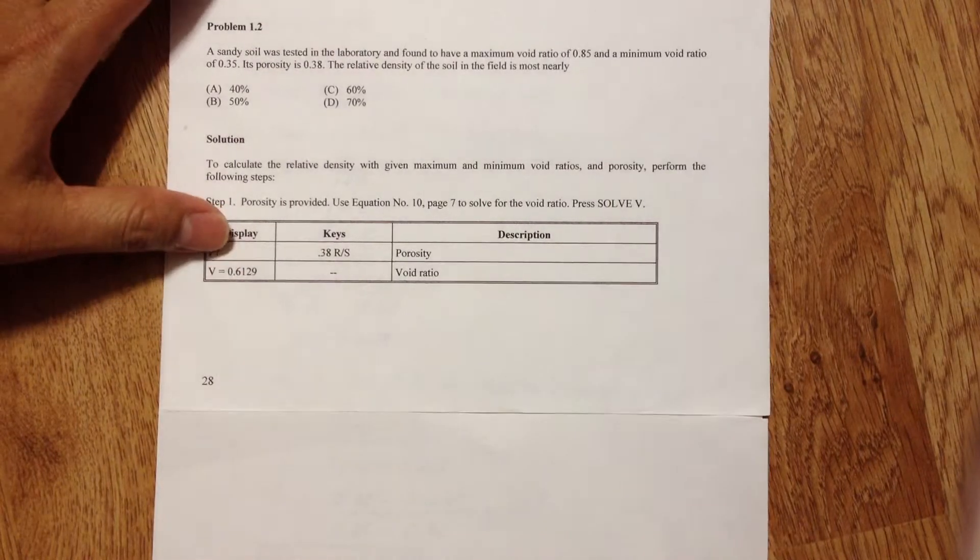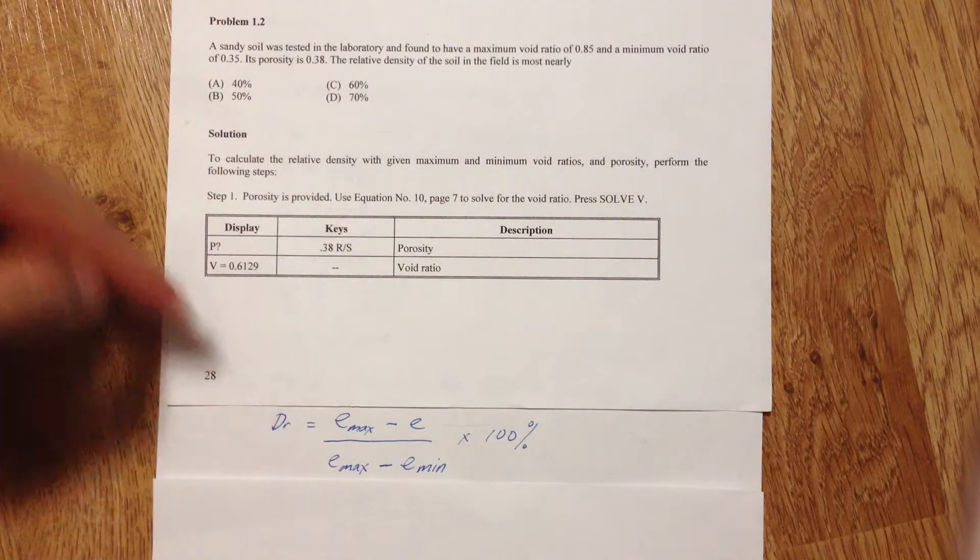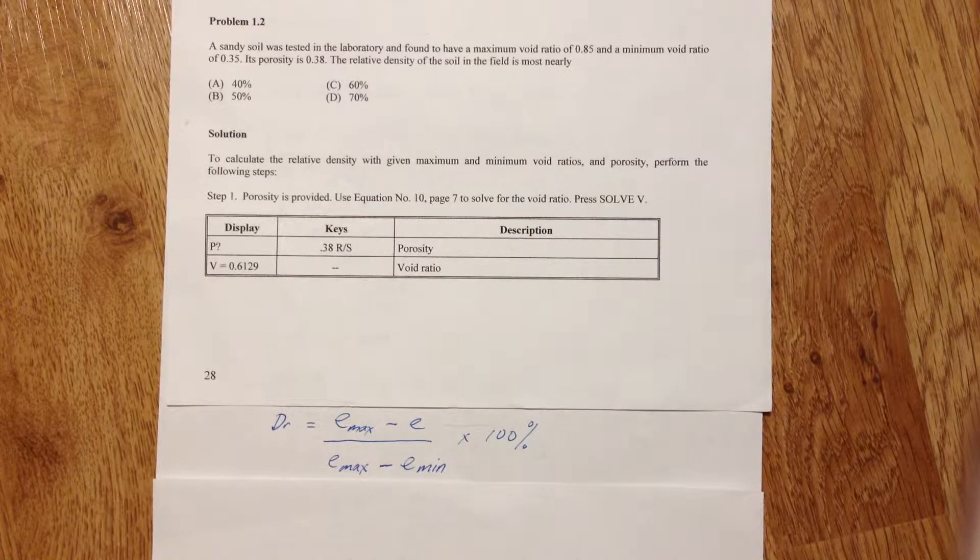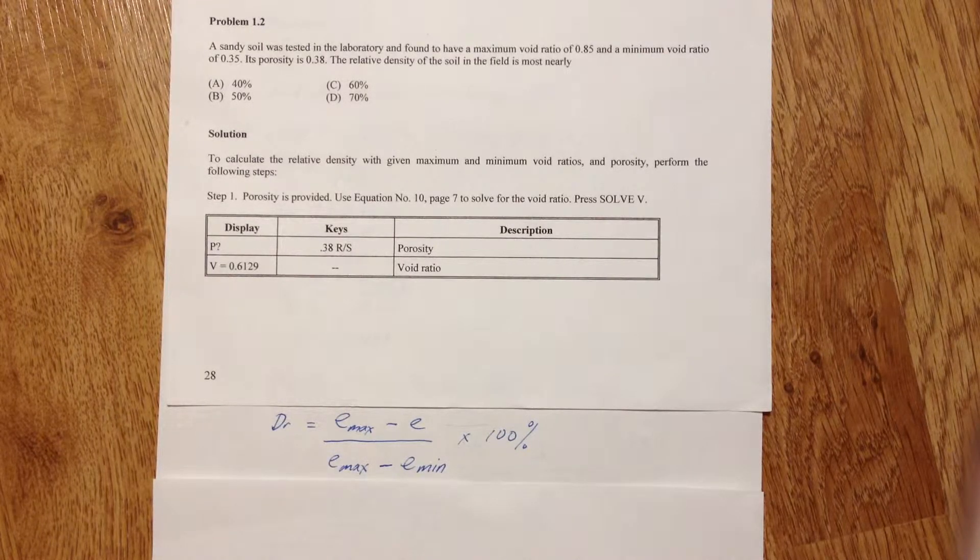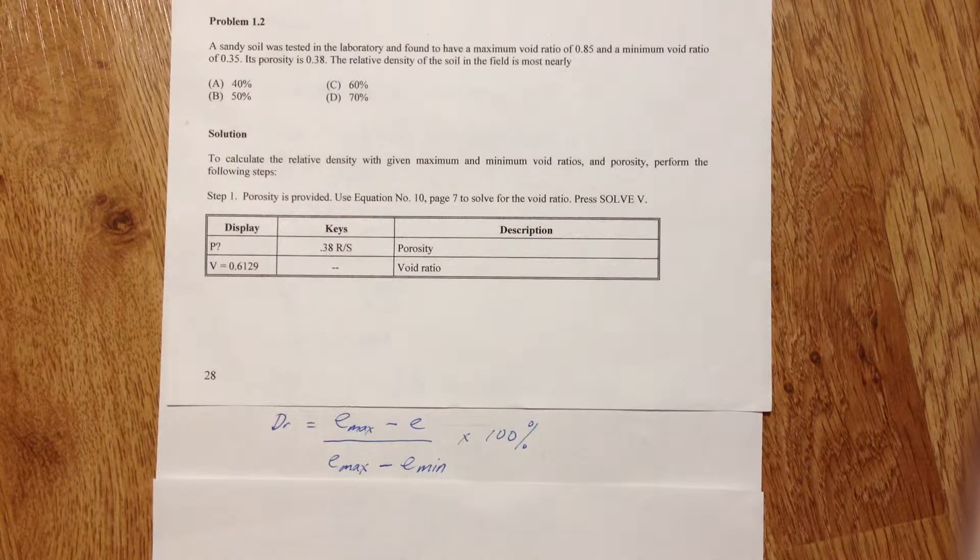So we are going to use this equation. Relative density equals E max for maximum void ratio minus E for void ratio divided by E max minus E min for minimum void ratio times 100 percent.